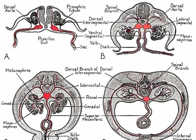The dorsal intersegmental branches are going to become intercostal or lumbar branches. The ventral branches merge, with one dropping out, becoming branches such as the celiac and cranial mesenteric arteries that supply the gut. The lateral branches will become, for example, renal branches or branches to the lateral wall.